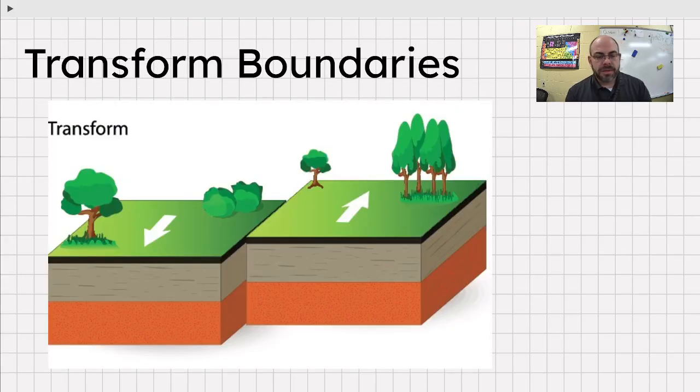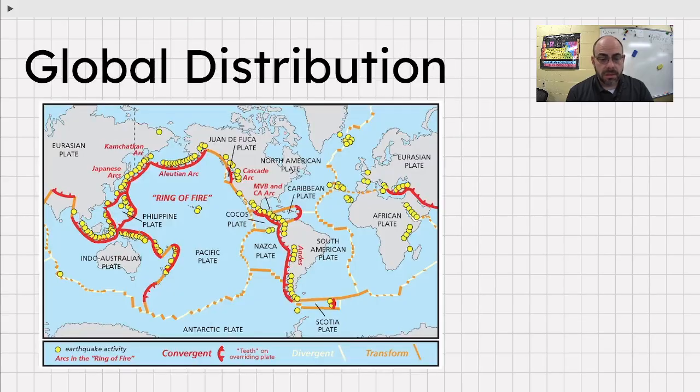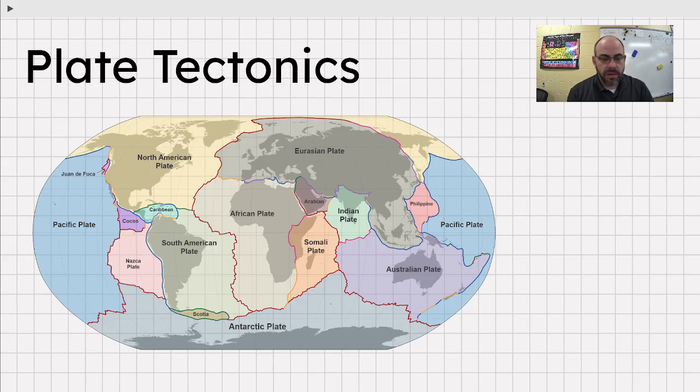Transform boundaries are where two plates are moving side by side, as opposed to up underneath one another. And crust is not created or destroyed. Sounds like one of Newton's laws. And the big hazard here is earthquakes. I mentioned the California boundary as something else earlier, but it is an example of a transform boundary. This plate is kind of sliding past one another, causes earthquakes. You can see a couple of the other ones here in the picture as well.